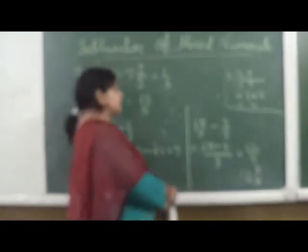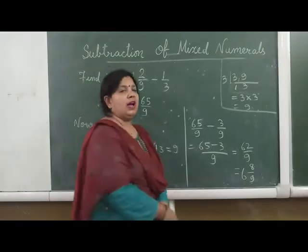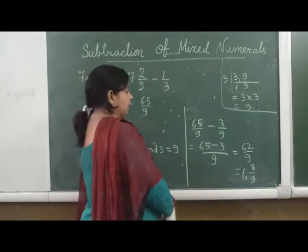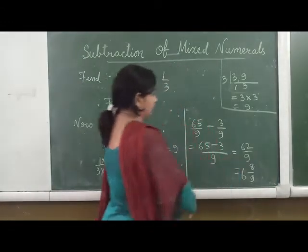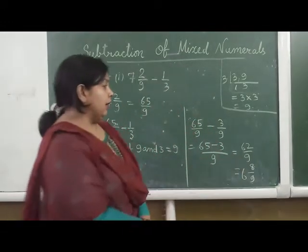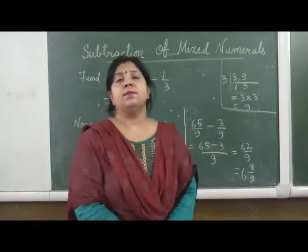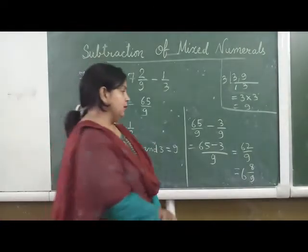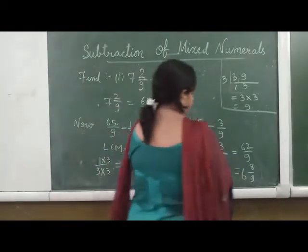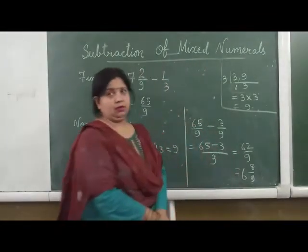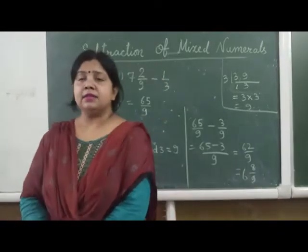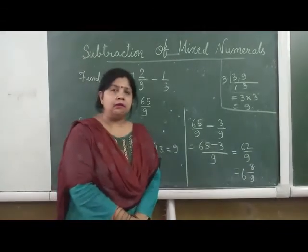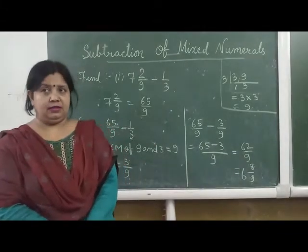Now we will subtract 65 by 9 minus 3 by 9, giving us 62 by 9, which is an improper fraction. So we will change it into a mixed fraction, as already explained in previous classes.